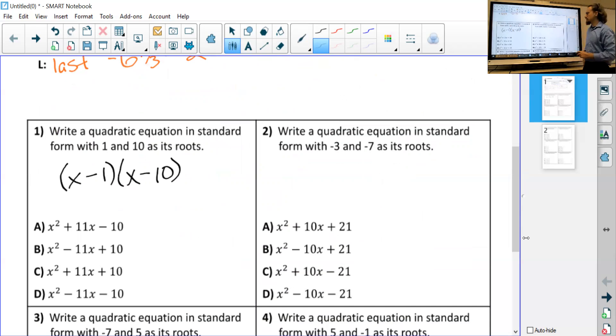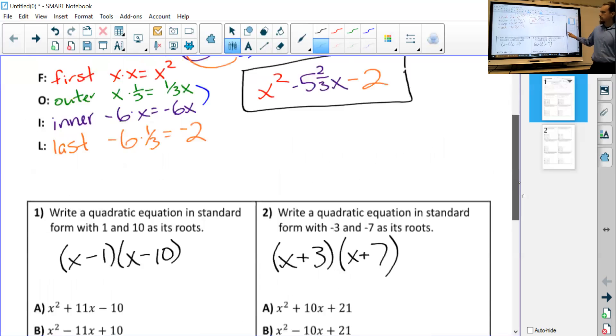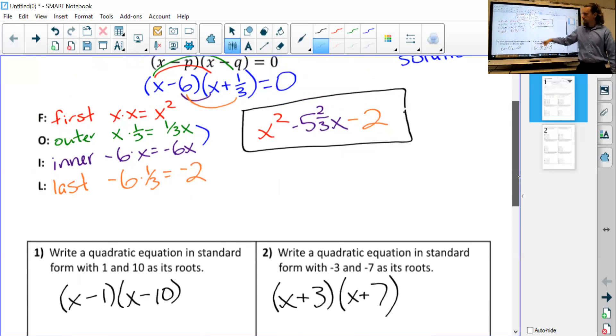But like this one here, the roots are negative three and negative seven. We would say this is going to be plus three and X plus seven. So what you put in the parentheses is always going to be the opposite sign of the root itself. So just be very careful with that. Really, that's the only thing that's going to mess you up. Other than that, then just go through the steps. First, outer, inner, last.